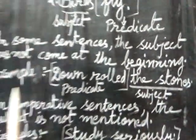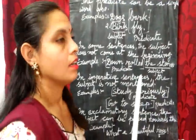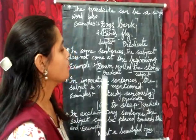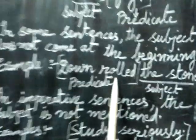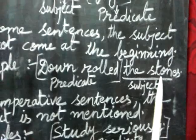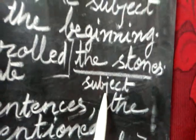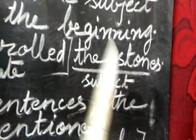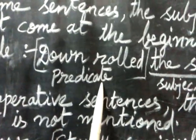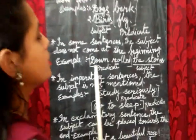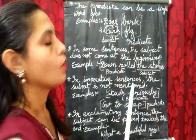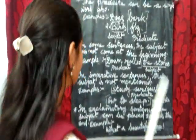In some sentences, the subject does not come at the beginning. For example: 'Down rolled the stones.' What rolled down? The stones. So 'the stones' is the subject, which is at the end of the sentence, and 'down rolled' is the predicate. Subject is not always at the beginning — you may also find it at the end of the sentence.